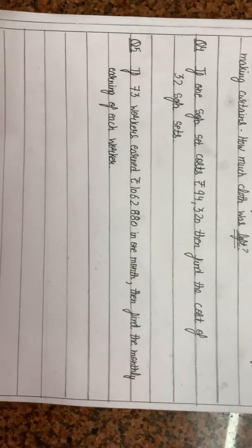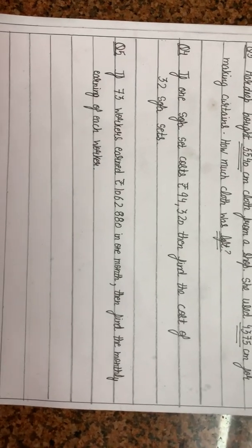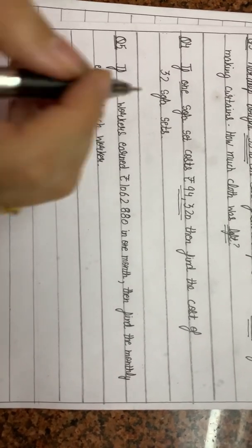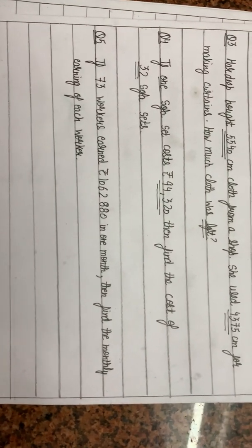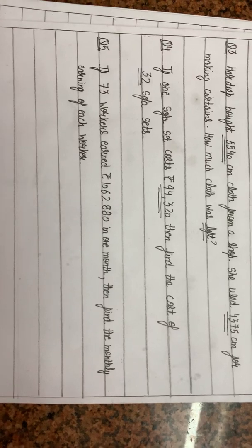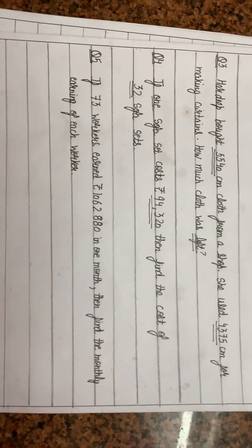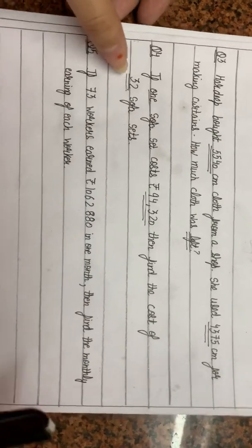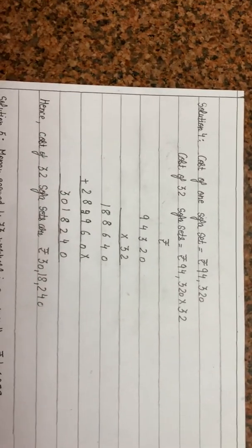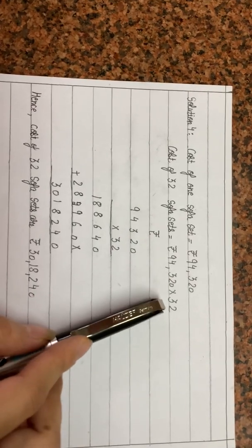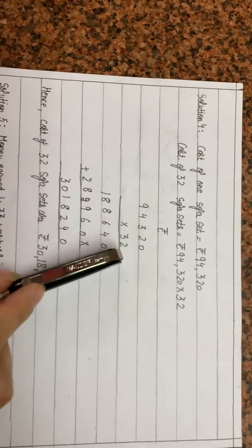Now let's have a look at the next question. If one sofa set costs Rs. 94,320, then find the cost of 32 sofa sets. One sofa set's cost is given as Rs. 94,320. We need to find the cost of 32 sofa sets. As discussed in the previous video, when one item's cost is given and we need to find the cost of more than one, we multiply. So here we will multiply 94,320 by 32. Cost of one sofa set: Rs. 94,320. Cost of 32 sofa sets: 94,320 multiplied by 32.